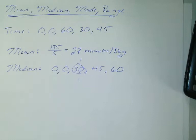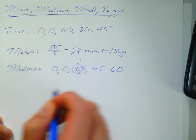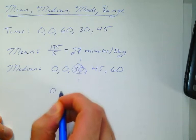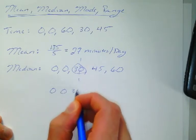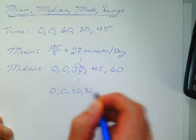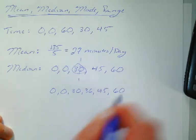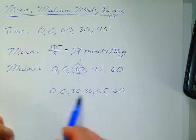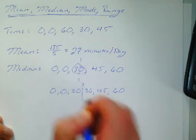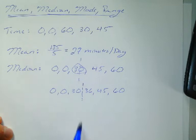Now, if you had an even number of terms, like say, let me just come up with a couple other ones. Say, I threw in another day here. So, I had 0, 0, 30. Say, I had 36. And, then I had 45 and 60. Now, in this case, because I have an even number of terms, my median falls between two terms. I have three below, three above.